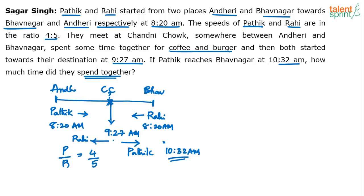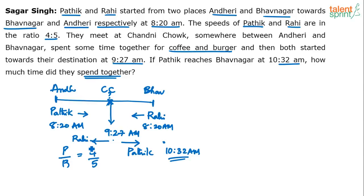What we've done so far is just the understanding of the question — we haven't really solved it. The text-based question has been represented pictorially: two stations Andheri and Bhavanagar, two guys Pathik and Rahi started at 8:20am towards each other, met at Chandni Chowk, spent some time together, then left for their respective destinations. Pathik reached his destination at 10:32am. The speed ratio given is 4:5.